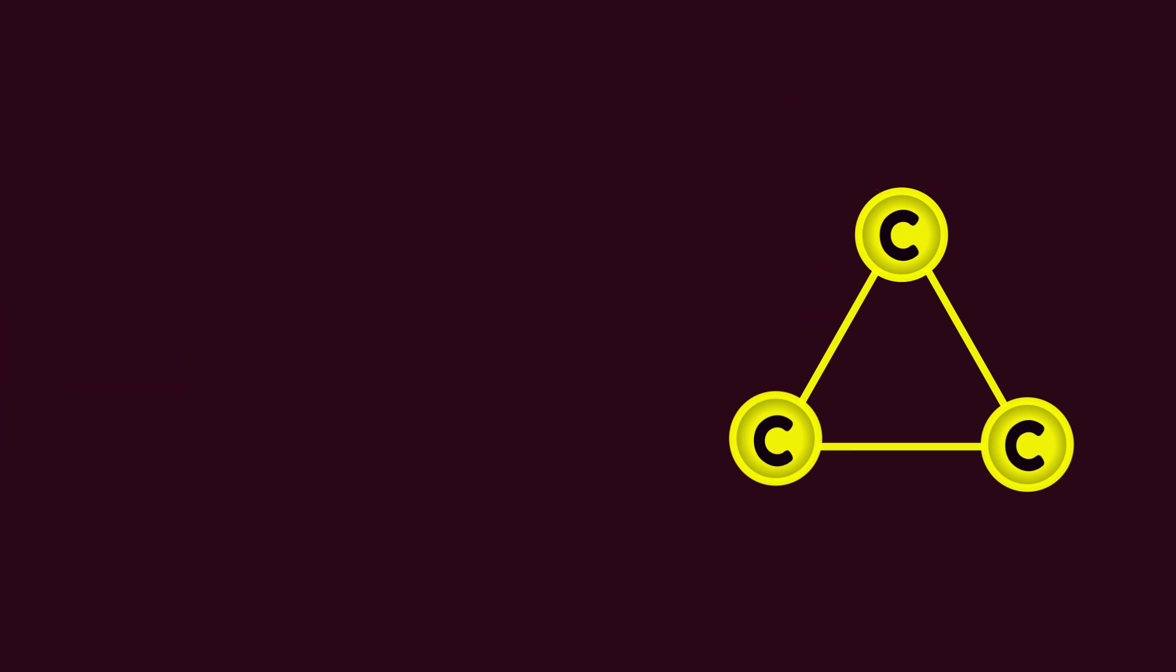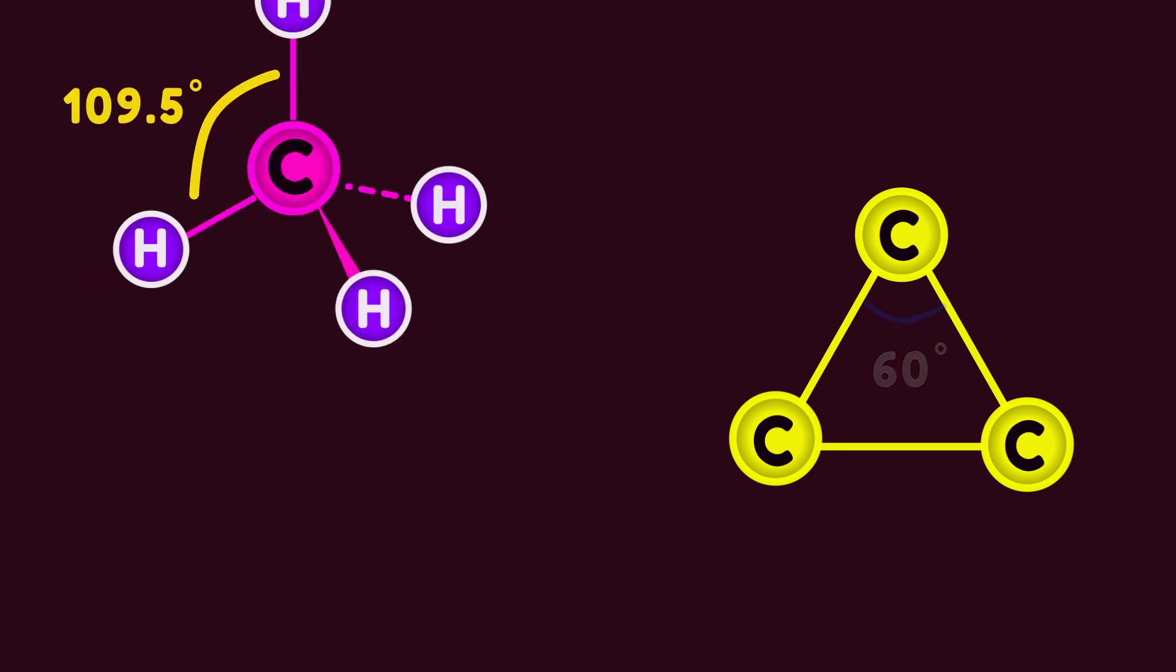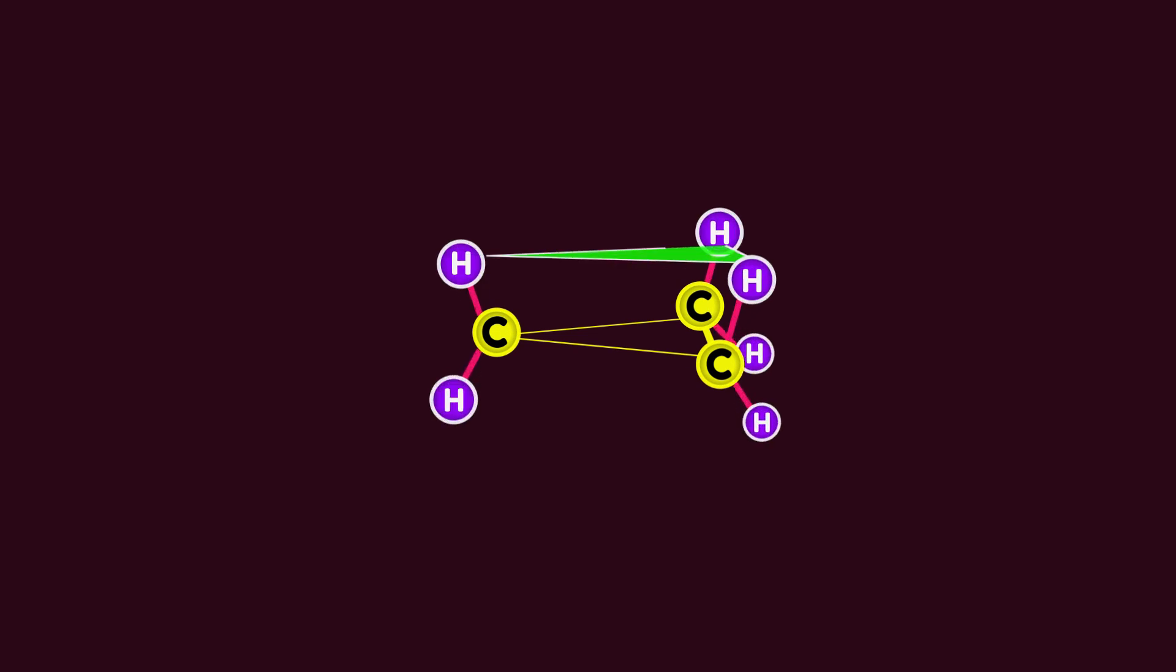The strain energy in cyclopropane is 27.5 kilocalories per mole. Although deviation from ideal tetrahedral bond angle is the most important reason for that, eclipsing CH interactions across carbon-carbon bonds as a result of planarity has a significant contribution.